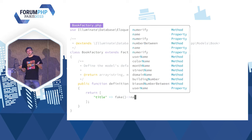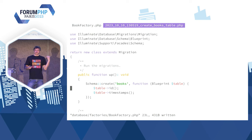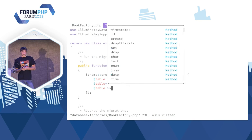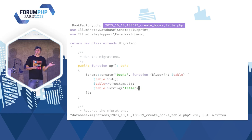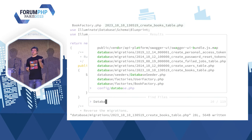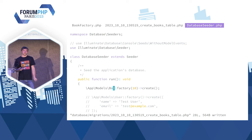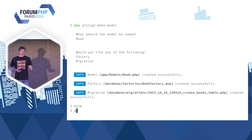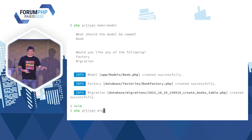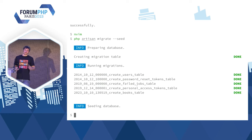La factory dispose déjà d'un faker qui va me permettre de mettre de la fausse donnée dedans. Je vais dire que j'ai un titre qui est un nom. Ensuite, je vais aller dans ma migration et lui rajouter la colonne que je viens de mentionner. Une fois que c'est fait, je vais aussi aller dans le database seeder : quand je vais créer ma migration, je vais pouvoir rajouter des données — là j'ai décidé de rajouter 10 livres. Je peux ensuite utiliser `php artisan migrate --seed`, qui va automatiquement créer ma base de données en utilisant la factory et rajouter des données.